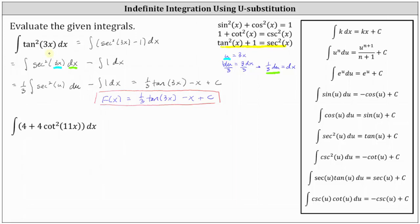Now looking at our second example, we have the integral of the quantity 4 plus 4 cotangent squared 11x dx. Once again, looking at the integration formulas on the right, we don't have an integration formula for cotangent squared u, and therefore we'll have to perform a substitution using one of the Pythagorean identities.